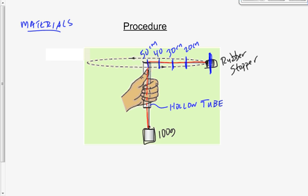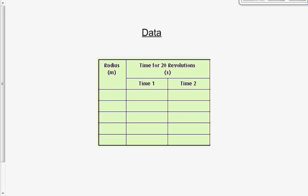As you're spinning it, you've got the radius measured — that's the manipulated variable. Speed responds to that, but you won't measure it directly. What you'll measure is the number of revolutions and the time it takes. Specifically, how long does it take to make 20 revolutions? Say the radius is 0.20 meters — time how long it takes to make 20 revolutions, then do it again. Get the time for 20 revolutions twice. Then increase your radius to 0.30 meters, get another time, then another, and so on.